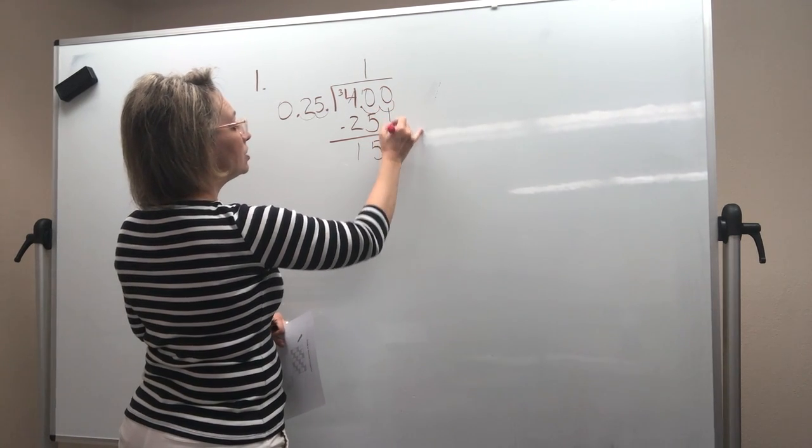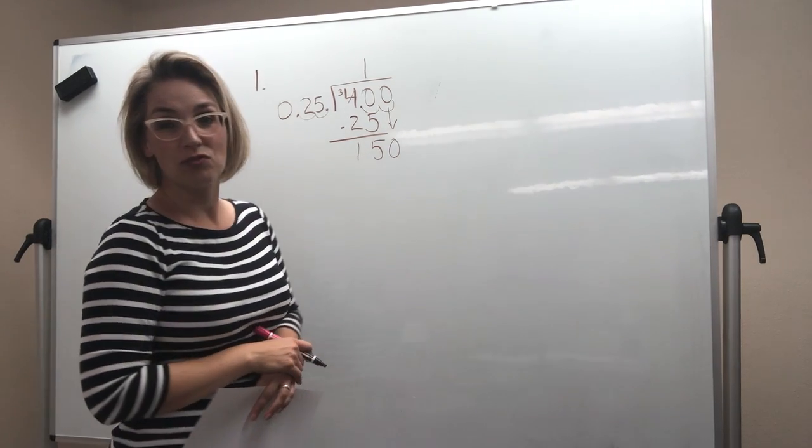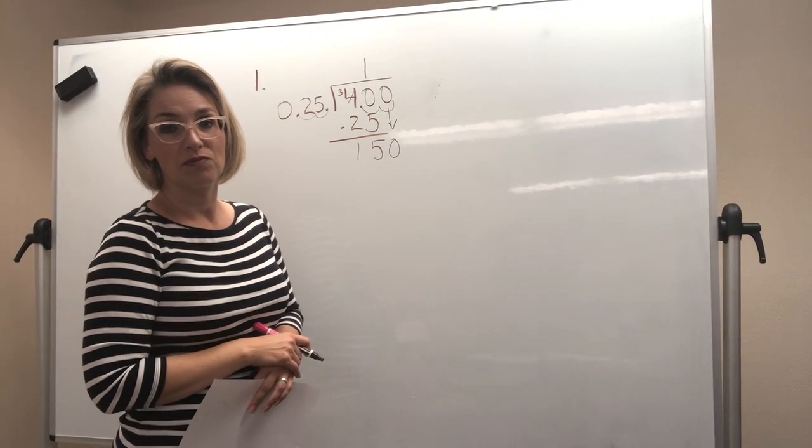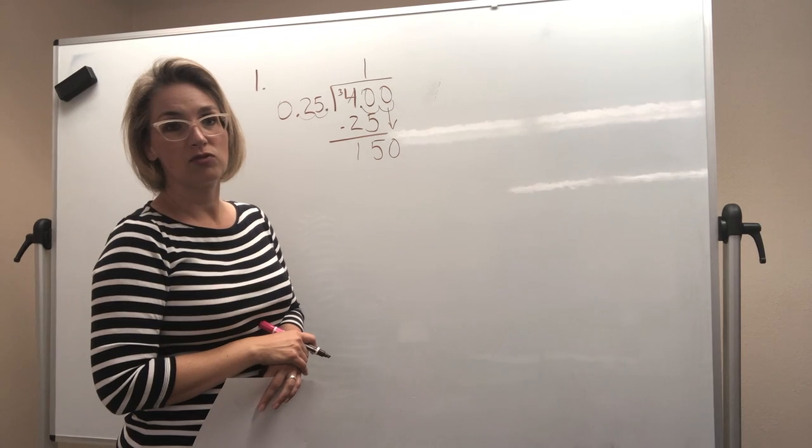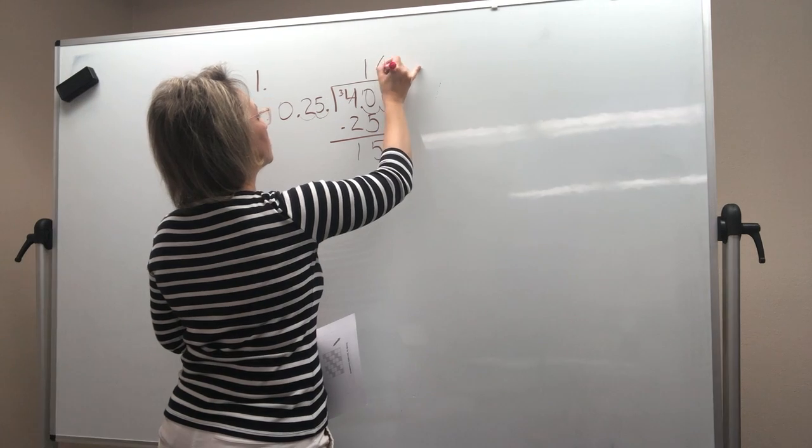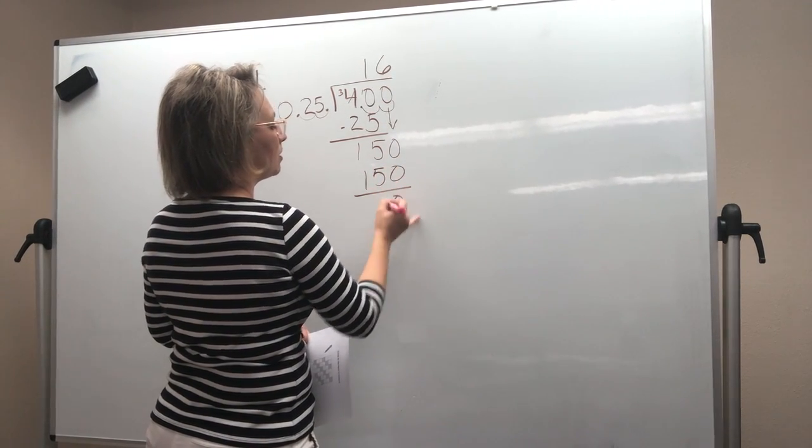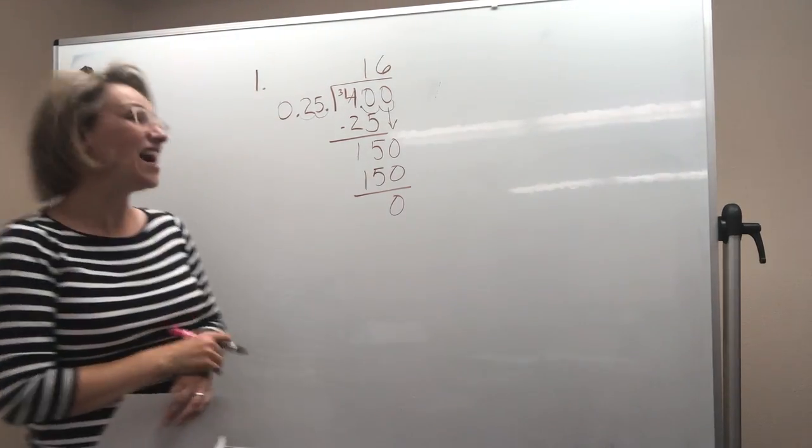I have another 0 to bring down. How many times does 25 go into 150? Think 4 times 25 is 100. So it's 6 times. So 6 times 25 is 150. My remainder is 0. I'm done.